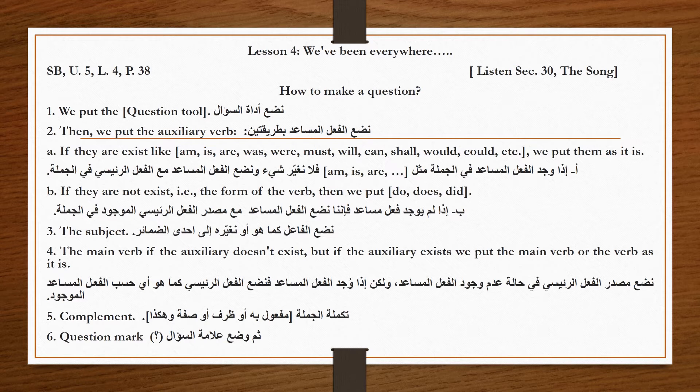Then we put the auxiliary verb — نضع الفعل المساعد. This is done in two ways. A: if an auxiliary verb already exists in the sentence — like is, are, was, were, must, will, can, shall, would, could, etc. — we put it as it is.